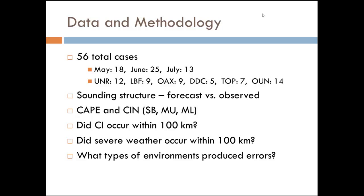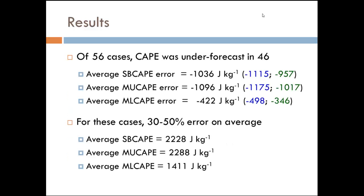A few other things I did consider: did convective initiation occur within 100 kilometers? Did severe weather occur within 100 kilometers? And overall, what type of environment was producing errors? Out of those 56 cases, CAPE was underforecast in 46 of them — quite a bit. The average surface-based CAPE error was over 1,000 joules per kilogram too low. These numbers are for those 46 underestimated cases, because a few were completely overestimated — if observed was 4,000 J/kg and the RAP forecast 6,000, it would throw off the averages.